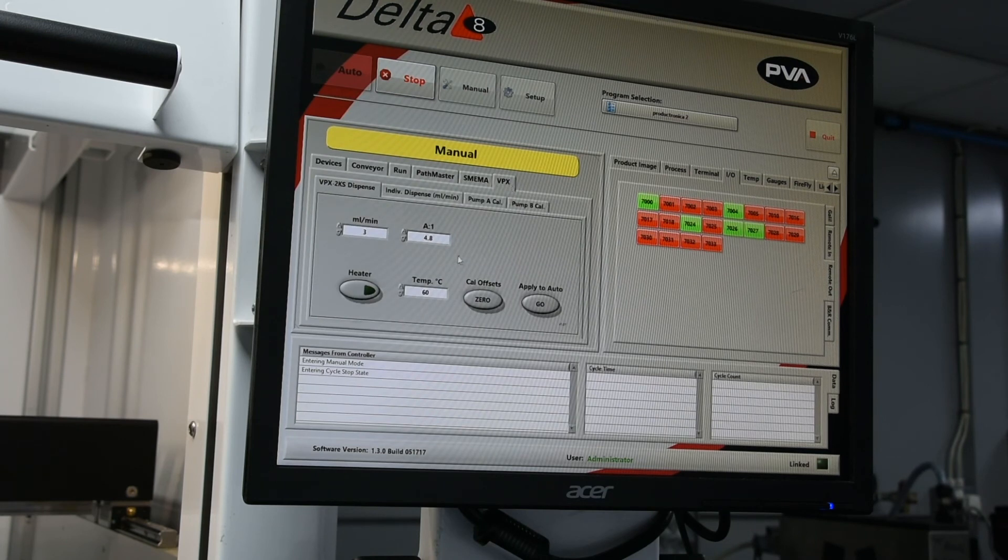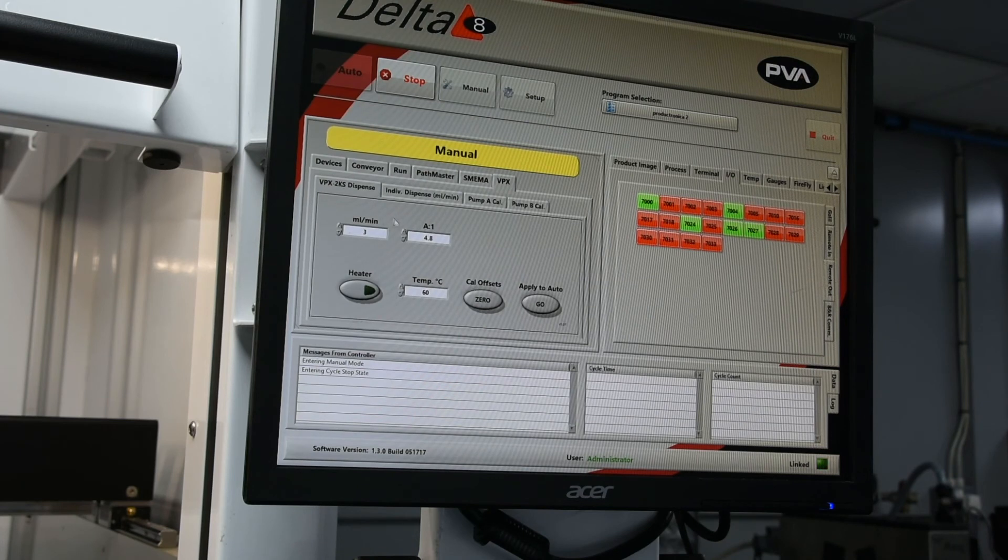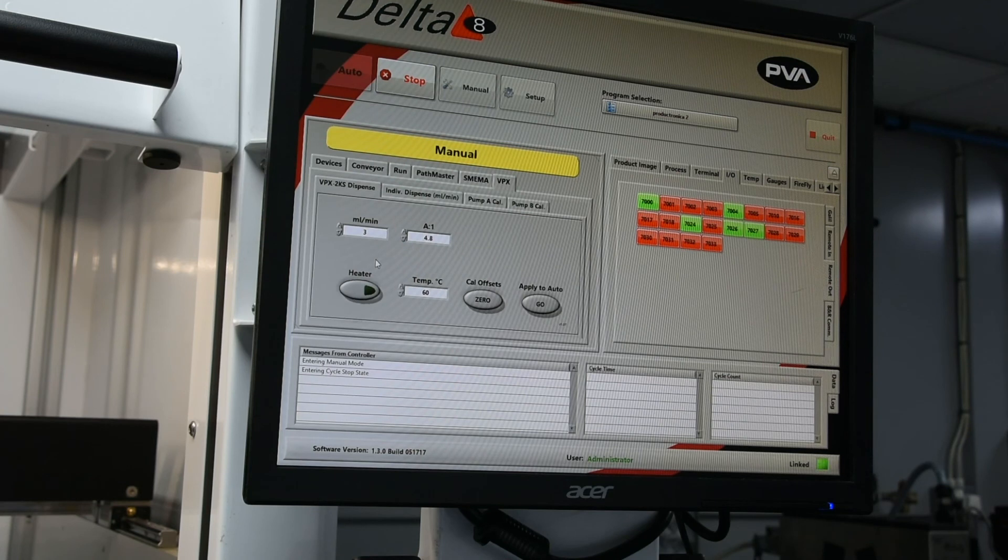Additionally, there is a new tab, in this instance called the VPX, that includes all important information regarding the material, such as the mix ratio, flow rate, and temperature.